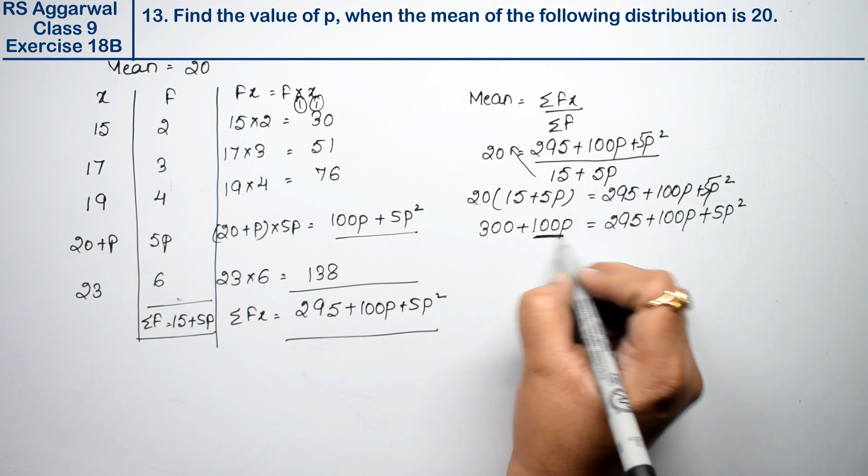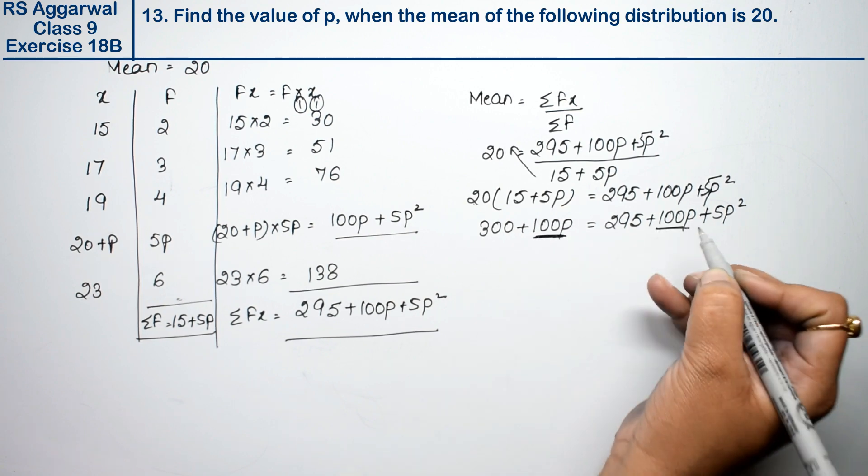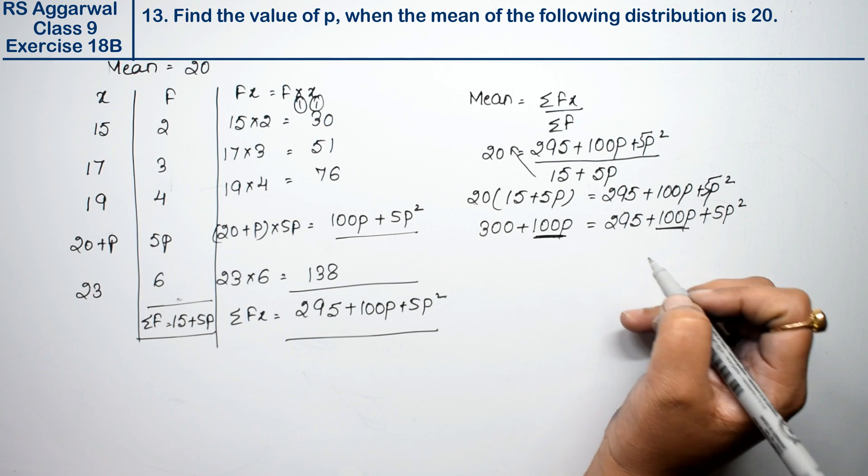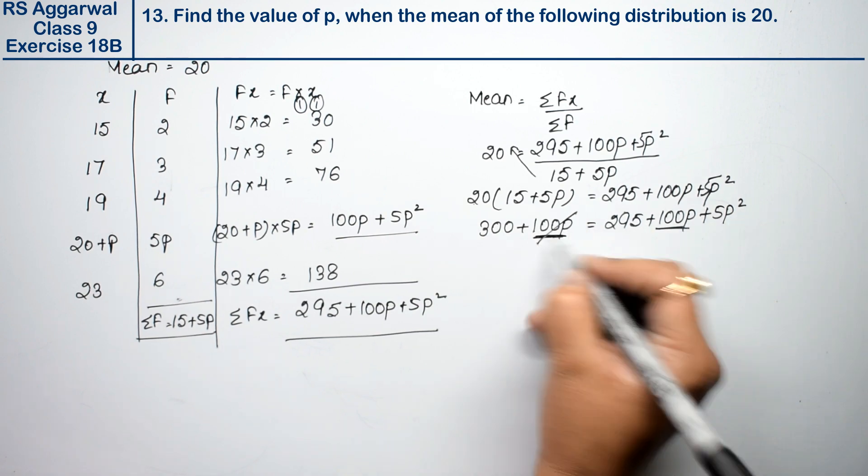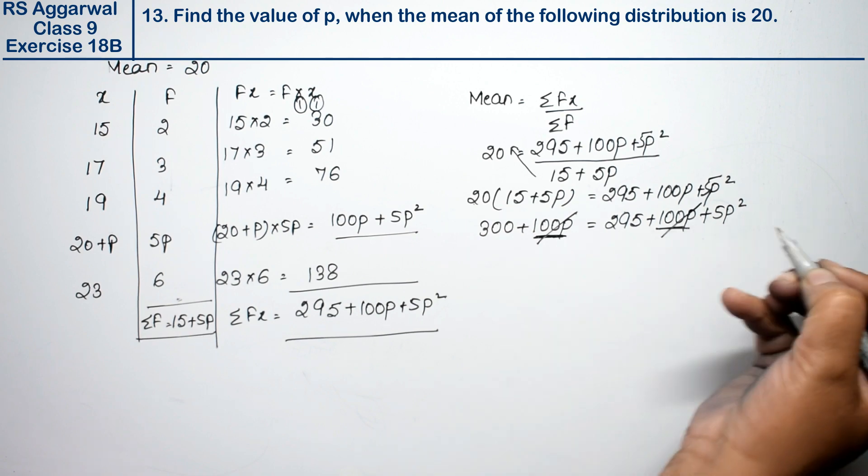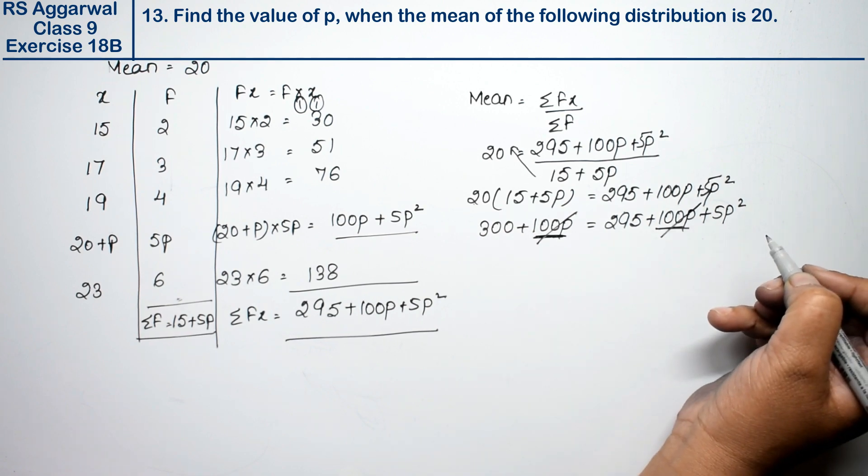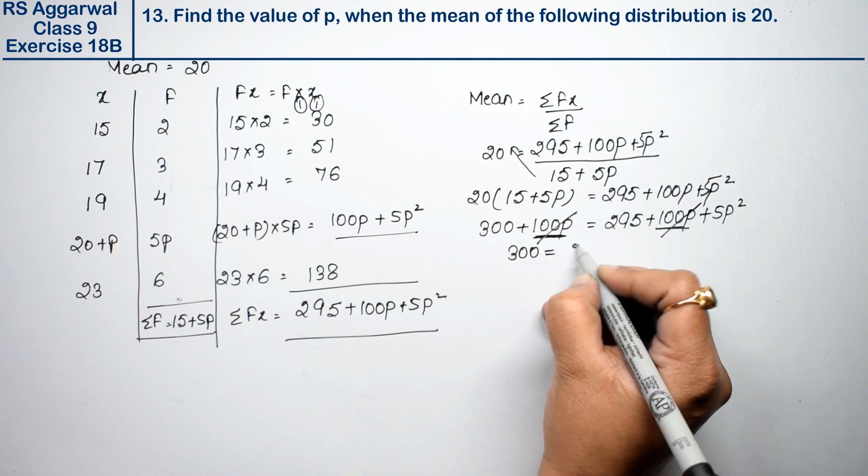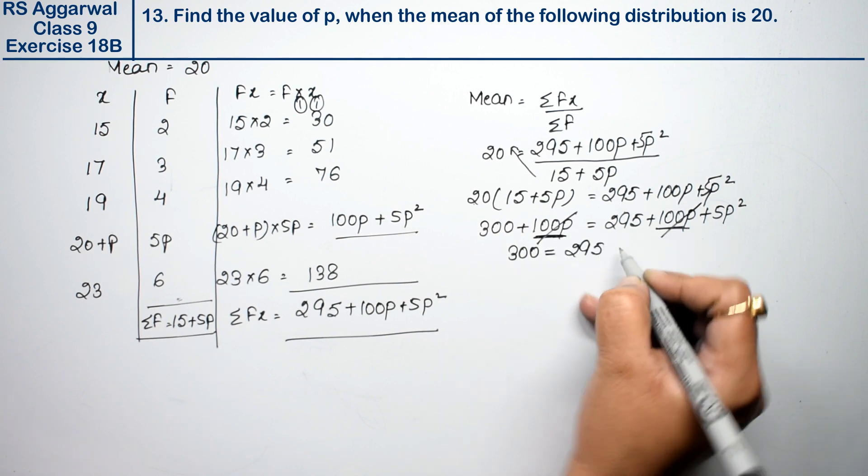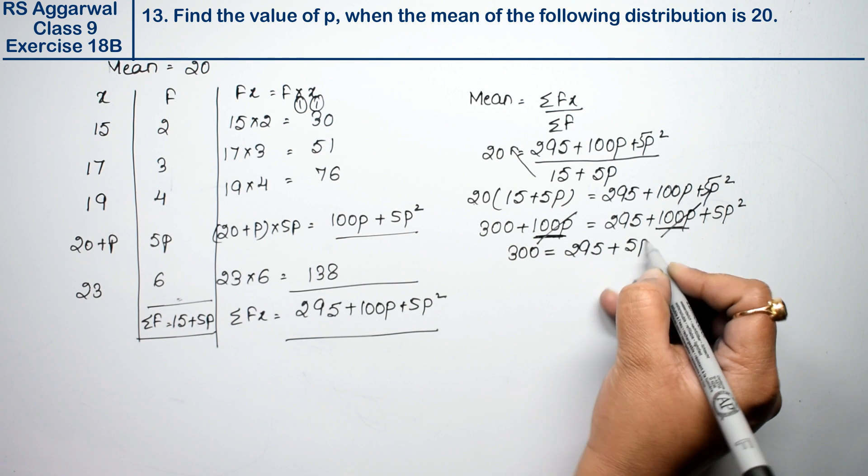There's 100p on both sides with the same sign. Since the same values appear on both sides, we can cancel them. So 300 equals 295 plus 5p square. Moving 295 to the left side: 300 minus 295 equals 5p square. This gives us 5 equals 5p square.